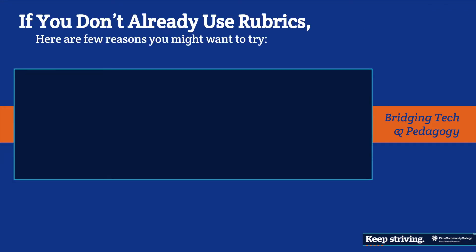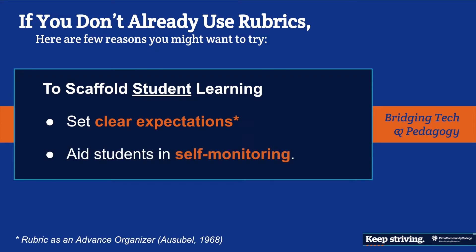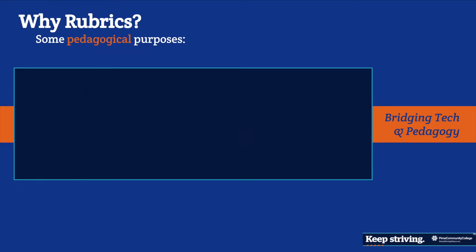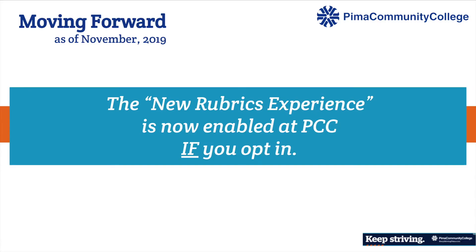Let's begin with why we use rubrics in the first place. Perhaps you're already using rubrics quite a bit, or perhaps you're not. First, rubrics can help set clear expectations — if we show rubrics to students in advance of the assignment, they know how their work will be assessed. They can also be a tool for self-monitoring, helping students revise their work. For instruction, rubrics help us be more fair and consistent with grading, and they can save us time.